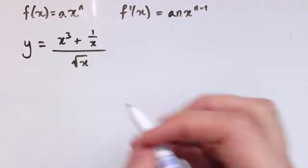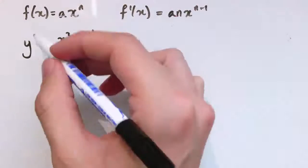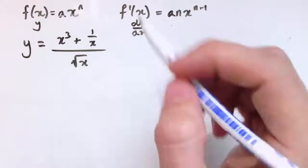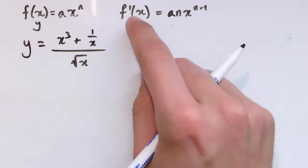So one last example. Let's have got y equals all of this. So remember, just the same notation here. We can have y instead of f(x), and then we'd have dy/dx instead of f'(x).